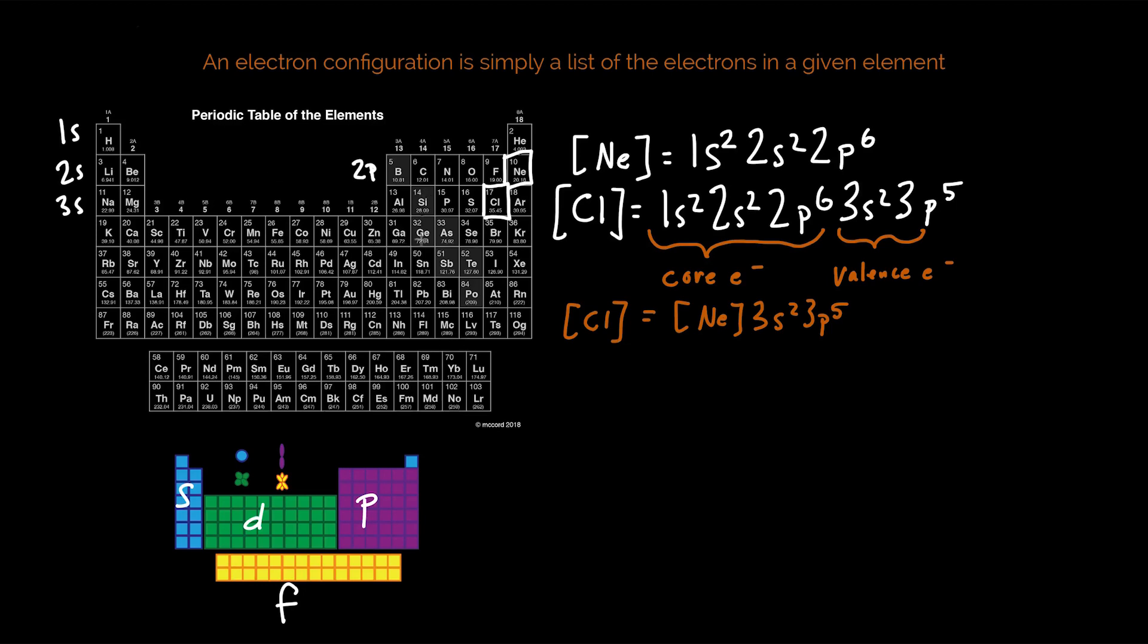The last example that we're going to do is going to be arsenic. Arsenic is 33 on the periodic table. We expect 33 electrons to be in it, in its neutral state. And so I'm going to quickly work through the core electrons and see if you can follow along. 1s2, 2s2, 2p6, 3s2, 3p6. So those are the core electrons.